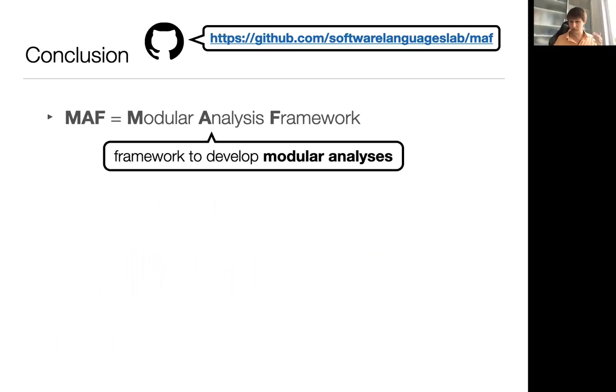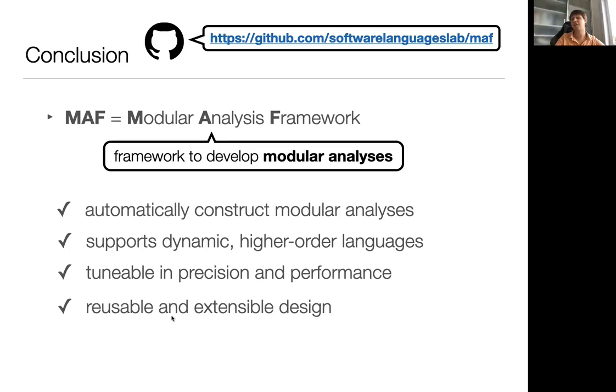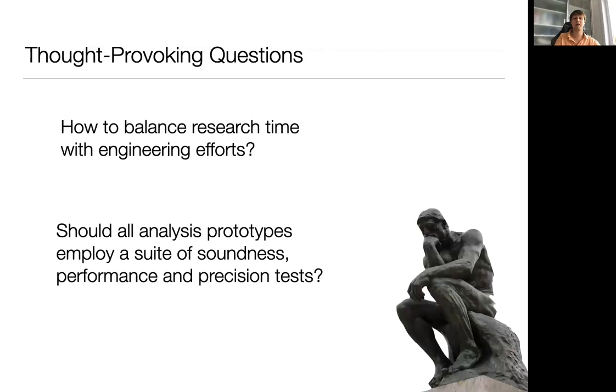So, in summary, we've introduced MAF here, a framework to develop modular analysis. The project is open source and can be found at the following link here in case you missed it previously. To recap the main strengths of MAF: it allows you to automatically construct a modular analysis given the definition of an intra-component analysis. It supports dynamic, higher-order languages such as Scheme or JavaScript. It allows you to easily configure the precision and performance of your analysis. It features a reusable and extensible design using Scala traits. And finally, it offers analysis developer and integrator tools to verify, evaluate, and inspect analyses created in MAF.